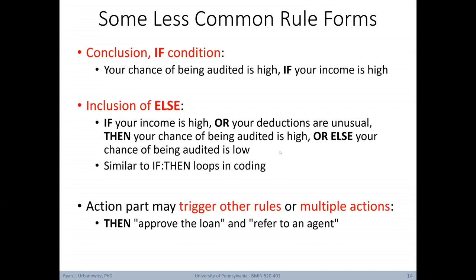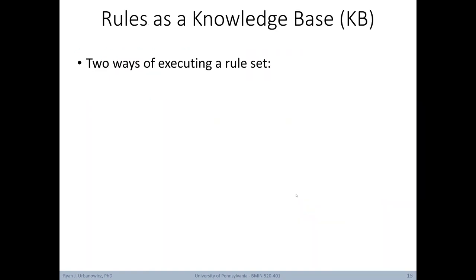You can also have situations where the consequent of a rule triggers other rules or multiple actions. For example, a rule could conclude: approve the loan and refer to an agent — two actions are presented. Now let's think of rules as a collective group forming a knowledge base. There are two ways of executing a rule set.